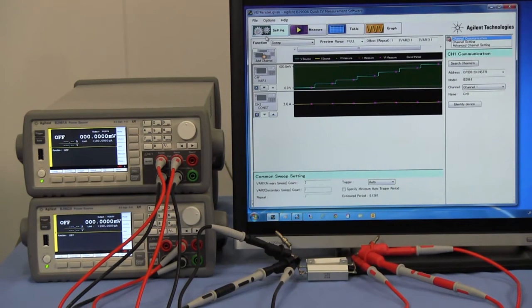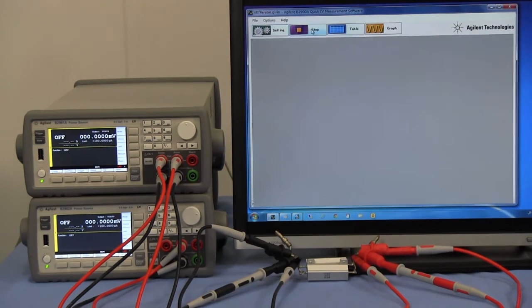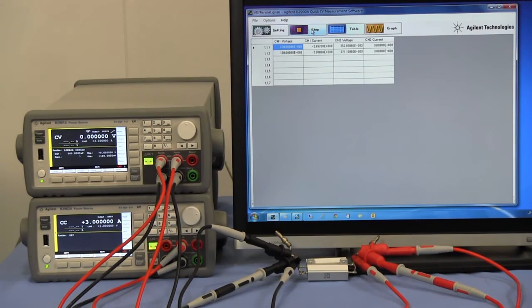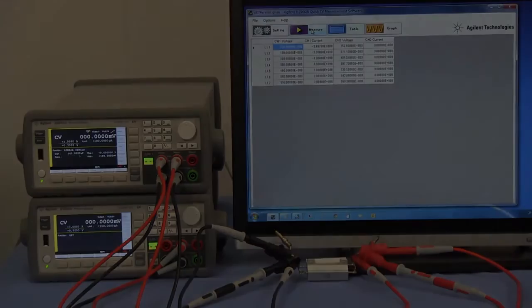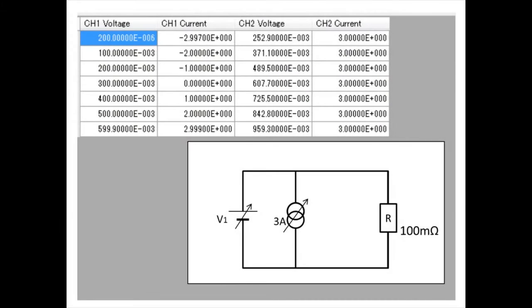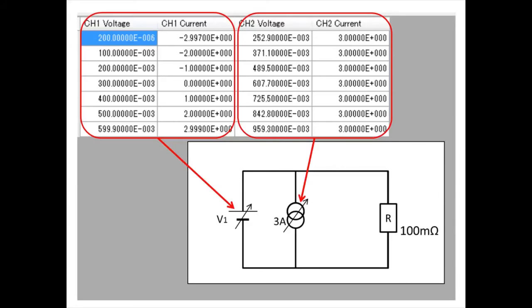Let's check the measured currents of both instruments. These are measured results. Starting from the left, the measured voltage of the voltage source, the measured current of the voltage source, the measured voltage of the current source, and the measured current of the current source are shown.